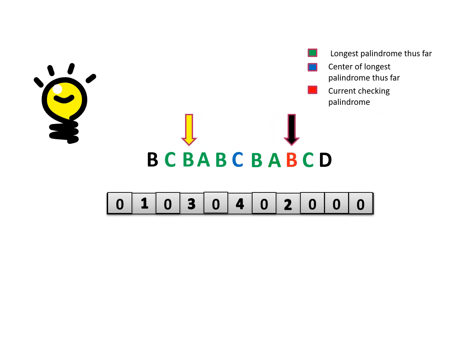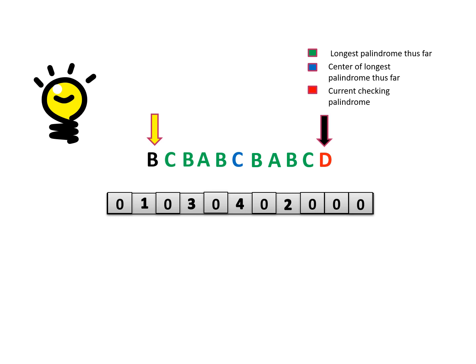Moving to the next character, the mirror value is 0 and it cannot be expanded further, so no changes are made. The pointer moves to the next character. Now we are not inside the longest palindrome, so we do not check the mirror — we must expand from the beginning. This character cannot be expanded, so no changes are made. The pointer moves to the final character, and we can't make any expansion either.